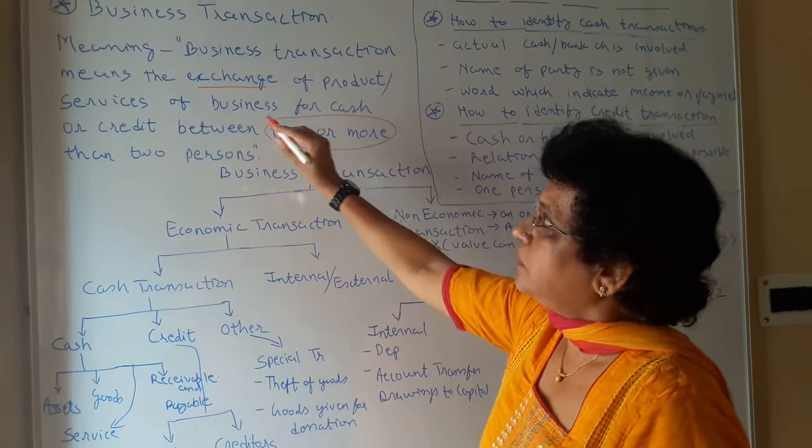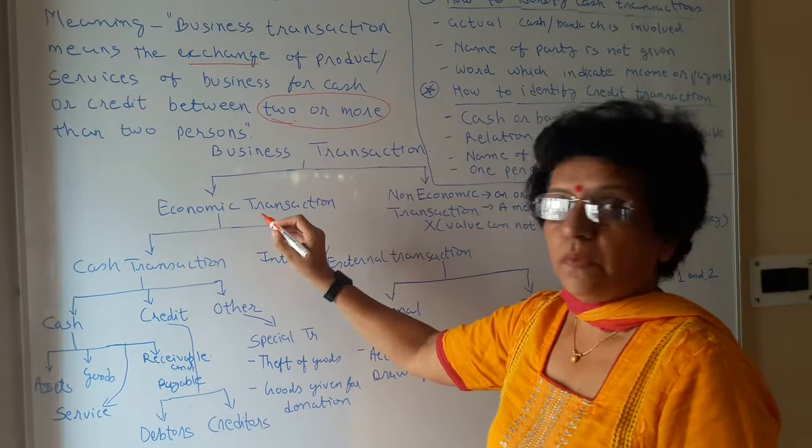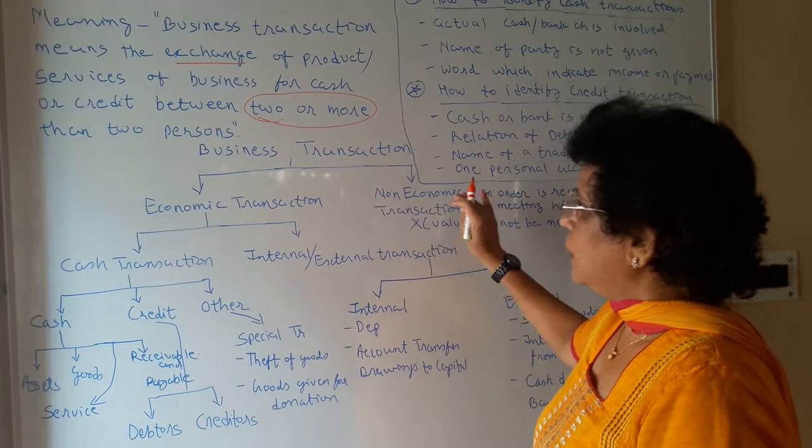Now let us try to understand the types of business transaction. In a business organization, we have learned there are mainly two types: economic activity and non-economic activity.